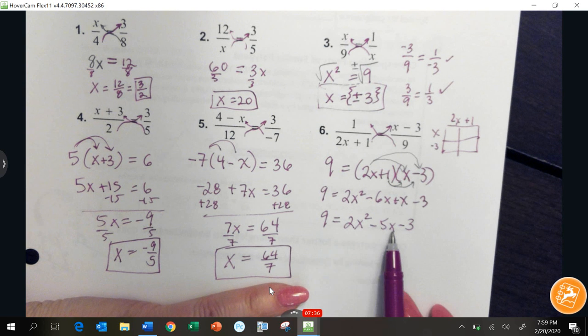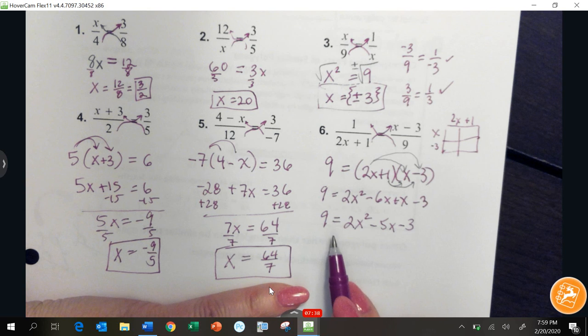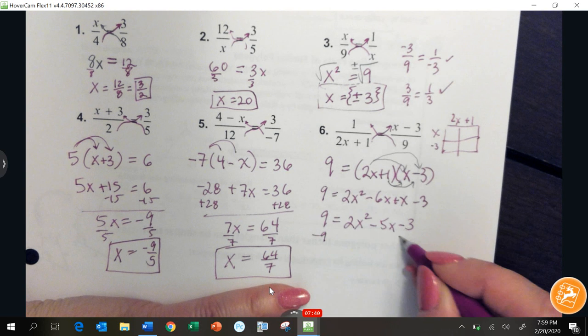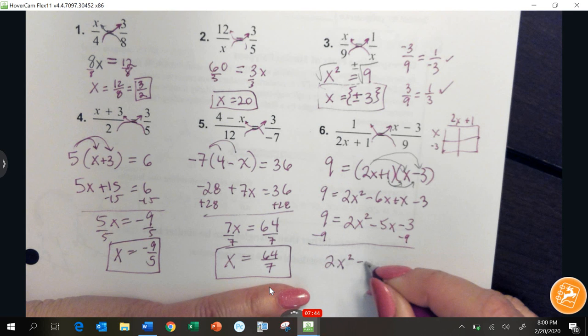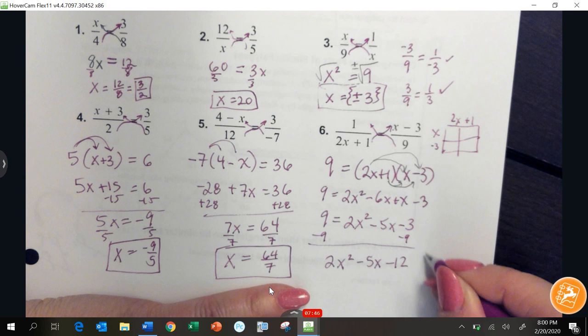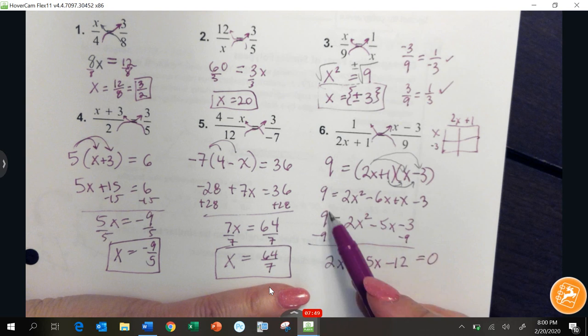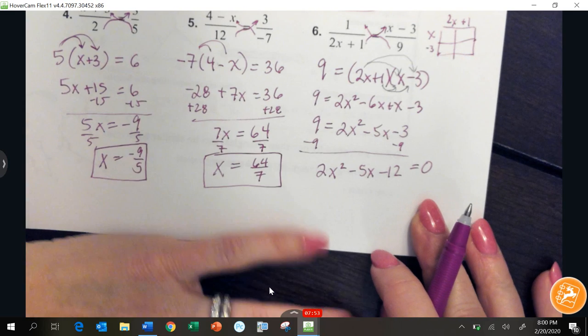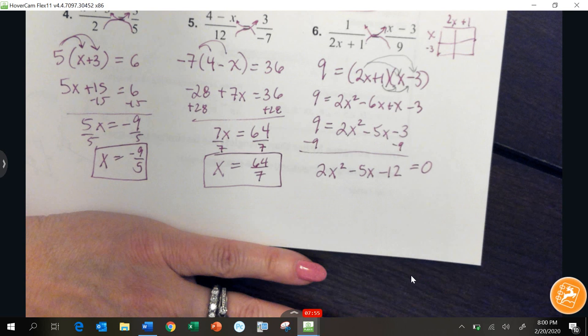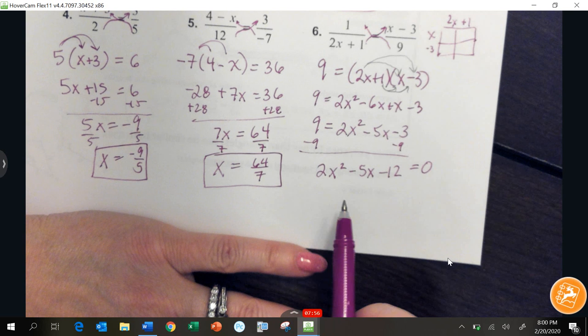Any time you want to solve an equation with a squared and we've got other terms, we're going to have to make this side equal 0. I'm going to subtract 9. 2x squared minus 5x minus 12. I'm going to set the other side equal to 0. I just moved the 9 to this side. That's the way I like it.